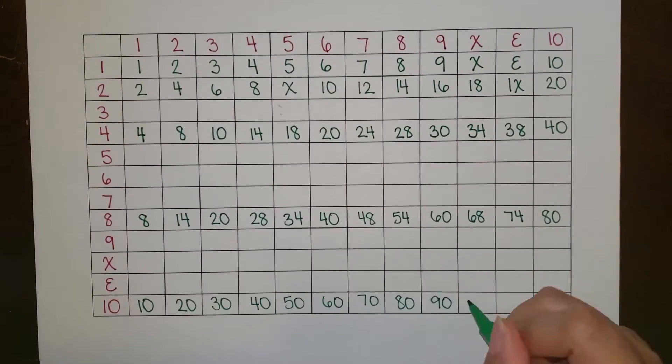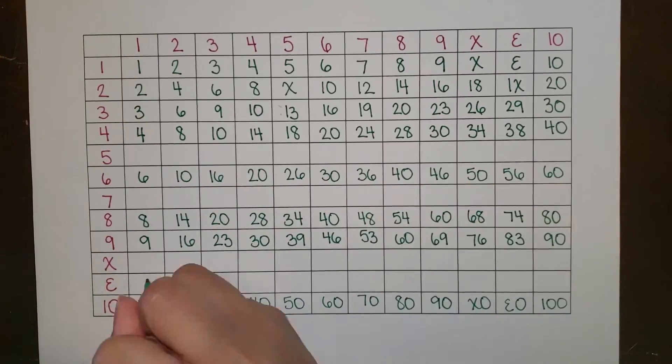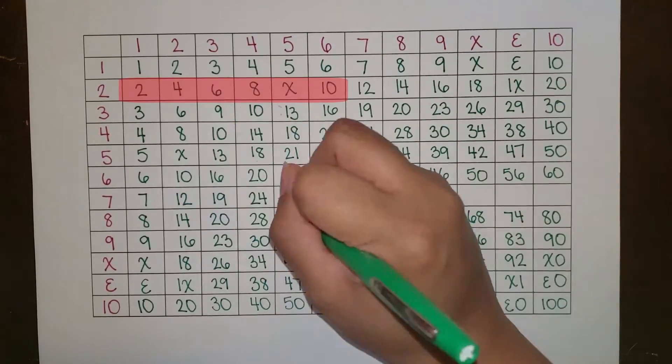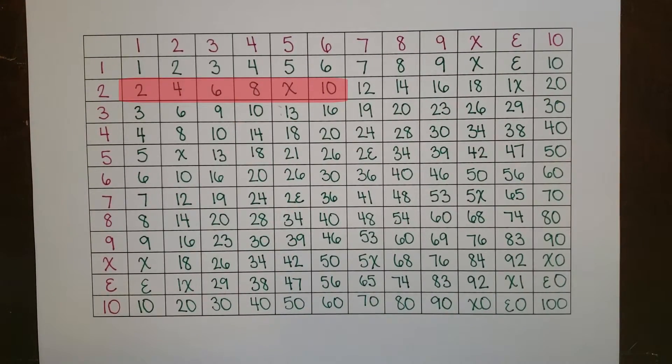Patterns that arise in multiples. Multiples of 2 always end in the same numbers: 2, 4, 6, 8, deck, 0. And the same thing happens with multiples of 3: 3, 6, 9, 0.